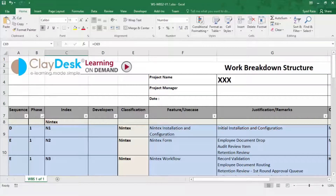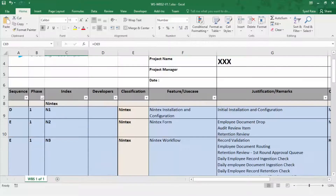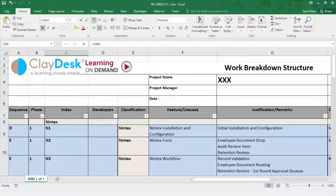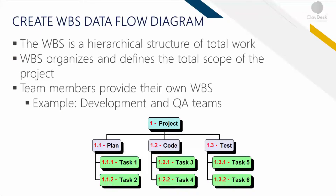As a homework assignment, go ahead and search the internet and download different WBS templates, because these are customizable — this is our version, but you can use any other WBS format. If you have any questions, post them in the discussion area and I'll be happy to see what you actually find yourself. So let's go back to our slides. The work breakdown structure is simply the process of subdividing project deliverables. Here's a simple WBS data flow diagram — it is a hierarchical decomposition of the total scope of work to be carried out by the project team to accomplish the project objectives and create the required deliverables, exactly as demonstrated in the Excel sheet.